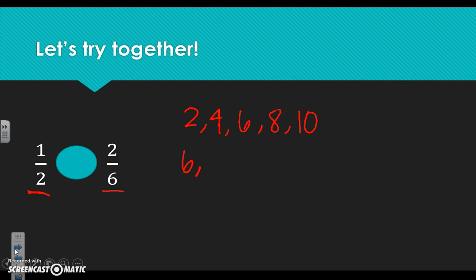The multiples of six are: six, twelve, eighteen, twenty-four, thirty. Let's take a look — do we see any multiples that are the same? Yes, we have six and we have six.